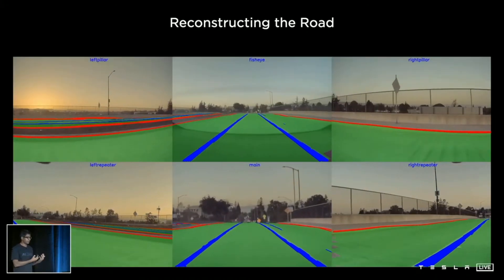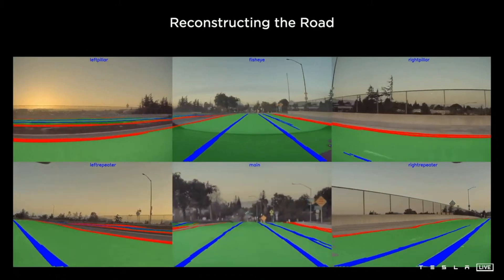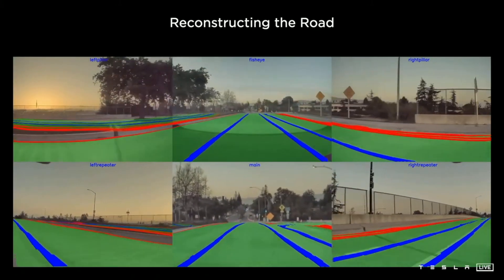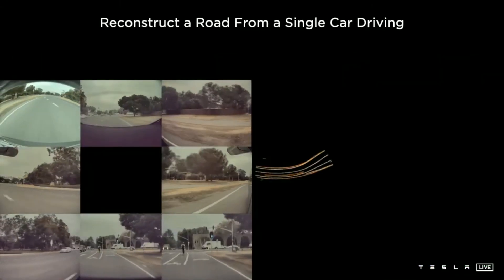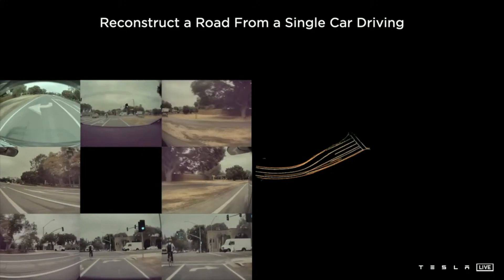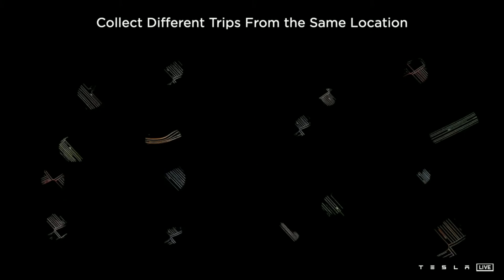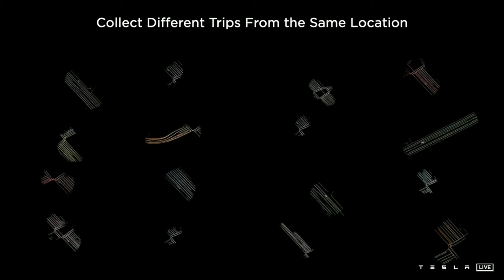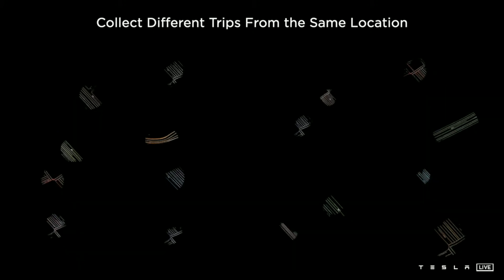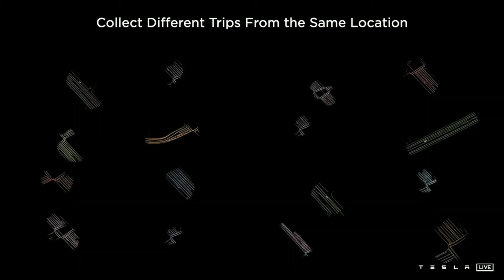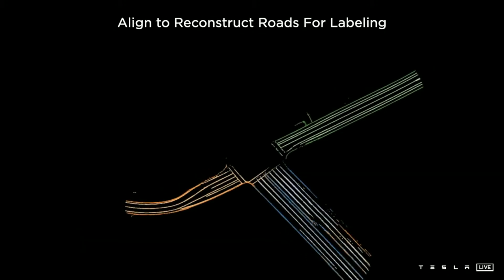Here's an example of how that looks. This is an optimized road surface that reprojects into the eight cameras the car has, across all of time. You can see how it's consistent across both space and time. A single car driving through some location can sweep out a patch around the trajectory using this technique. We also collected different clips from the same location, from different cars, and each of them sweeps out some part of their road. We can bring them all together into a single giant optimization — these 16 different trips are aligned using various features such as road edges and lane lines.